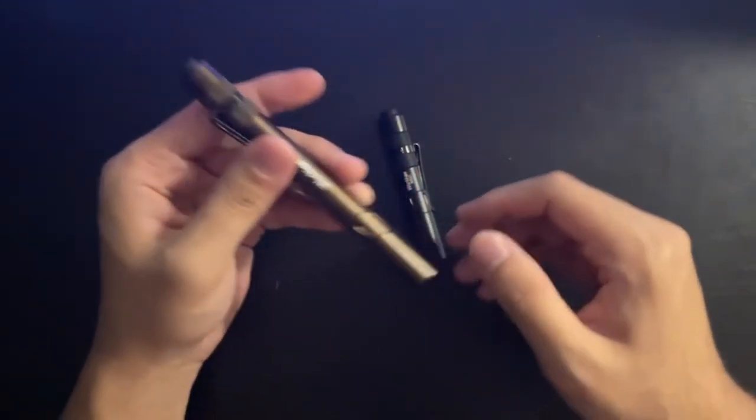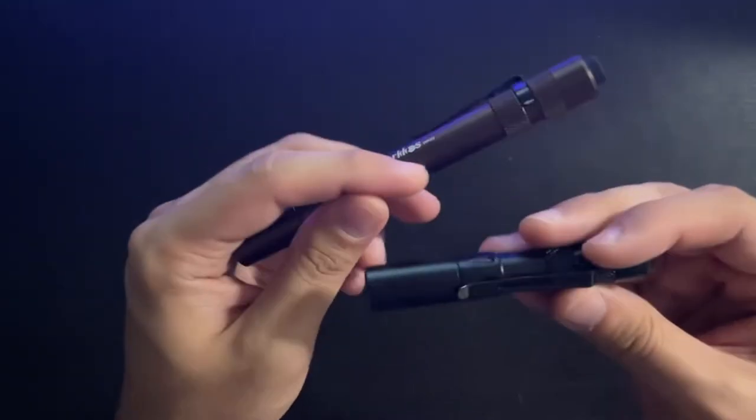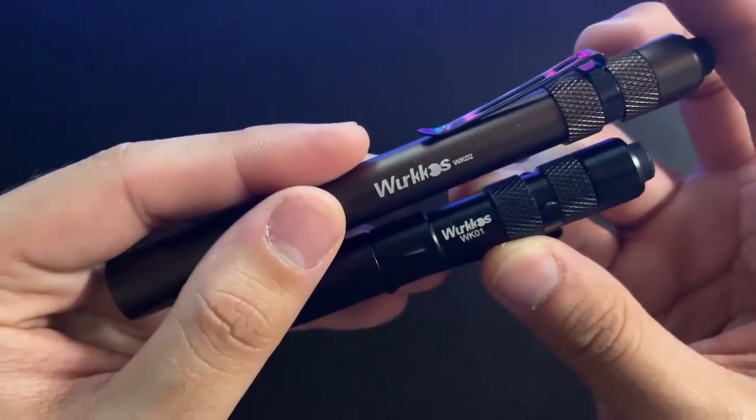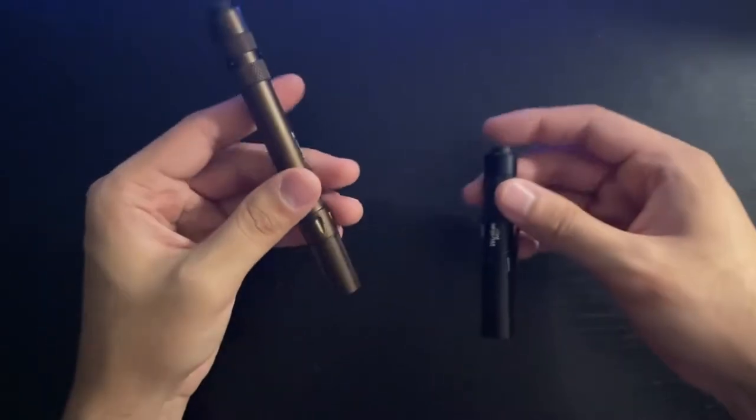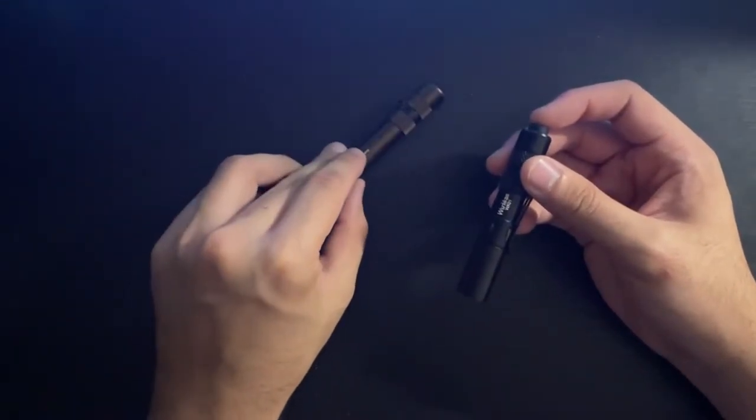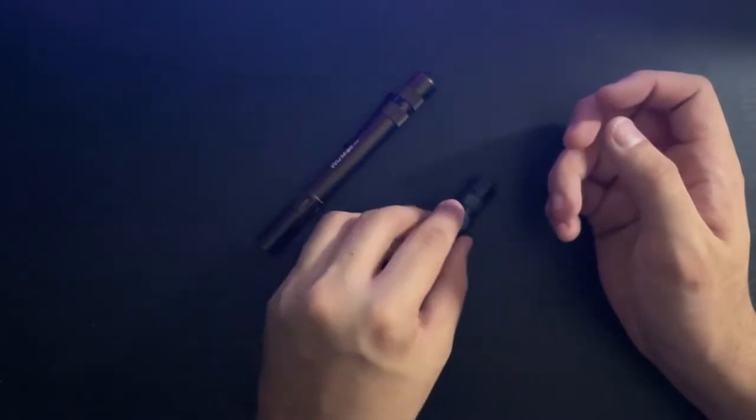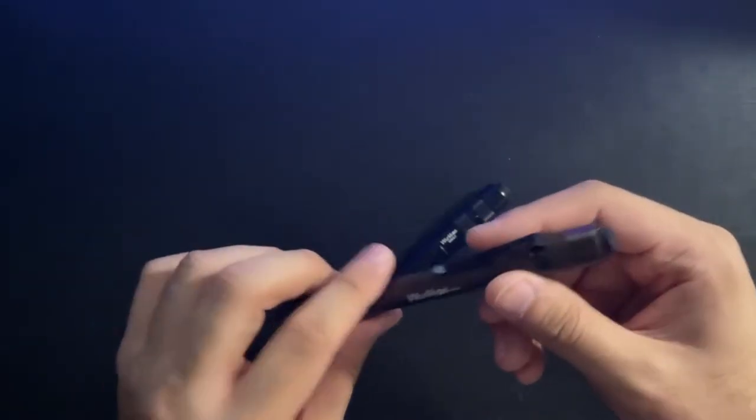I just want to make this video about the Wurkkos WK series, this is the WK01 and 02. I consider these to be one of the best AAA lights you can get on the market. This is a single AAA and this is a double AAA light pen light.